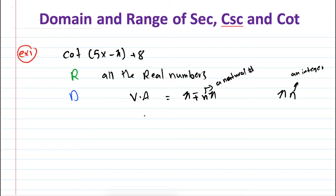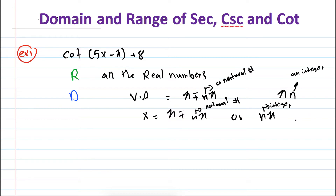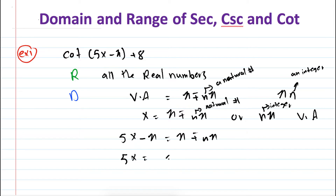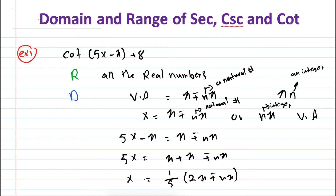So at x = π ± nπ or nπ we have vertical asymptotes. What if we don't have just x but instead 5x minus π? We're going to set 5x minus π equal to π plus or minus nπ. So 5x = π plus π plus or minus nπ, and multiplying both sides by 1/5, we get x = (1/5)(2π ± nπ).